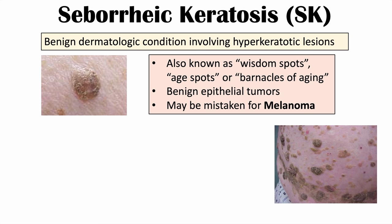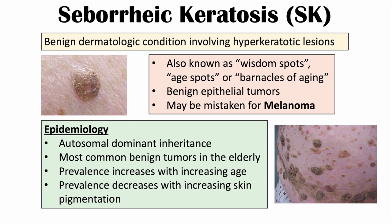There are several different influencing factors that can increase the chances of having this condition. One of them is genetic inheritance — some cases can be due to autosomal dominant inheritance, meaning one of your parents would have had to have had this condition, and in those cases the skin lesions are going to be more numerous. Another risk factor is increasing age, as the prevalence of this condition increases with increasing age.